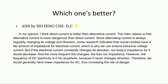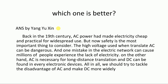Back in the 19th century, AC power made electricity cheap and practical for widespread use. But now safety is the most important thing to consider. The high voltage used in transmitting AC can be dangerous, and one mistake in the electric network can cause millions of people to experience an electricity outage. On the other hand, AC is necessary for long-distance transmission and DC can be found in every electronic device. All in all, we should try to address the disadvantages of AC and make better use of DC.